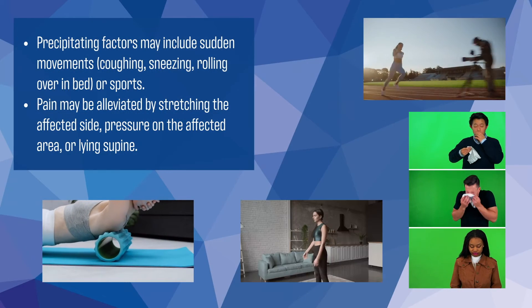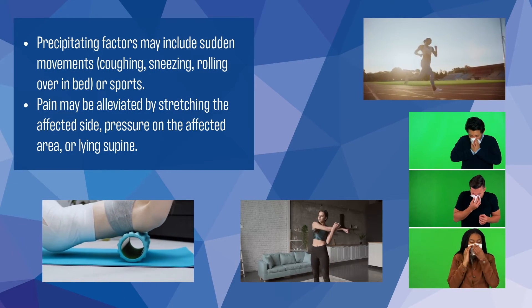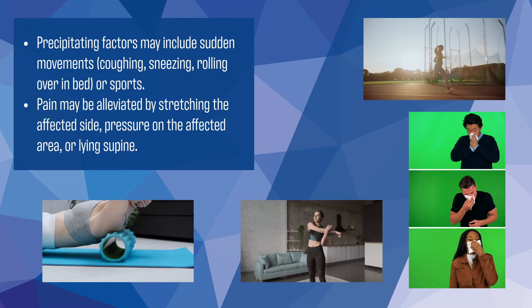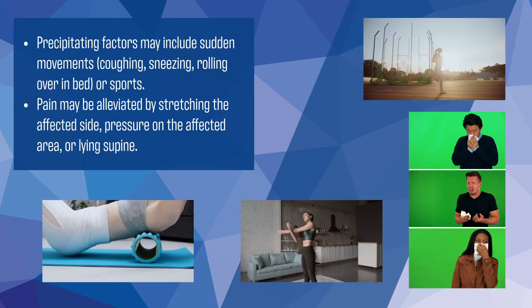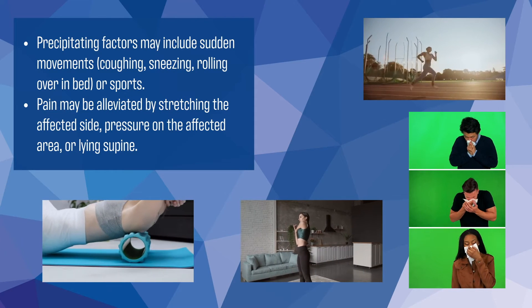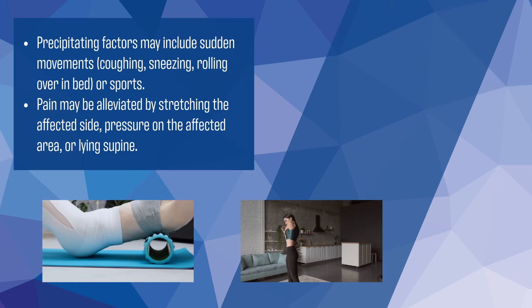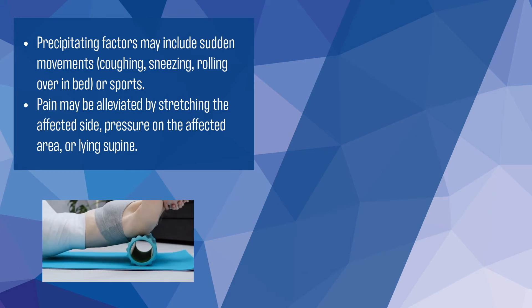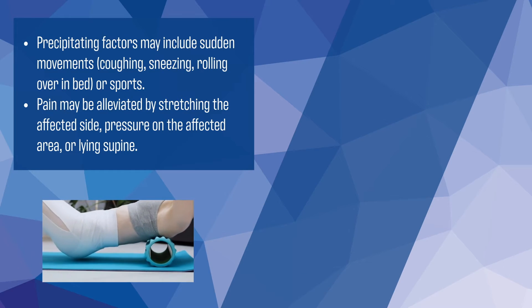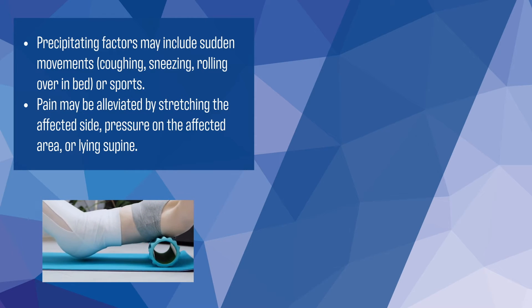Factors that can trigger Slipping Rib Syndrome may include sudden movements like coughing, sneezing, or even rolling over in bed, as well as participation in certain sports activities. Patients often find relief from the pain by stretching the affected side, applying pressure to the affected area, or lying down in a supine position.